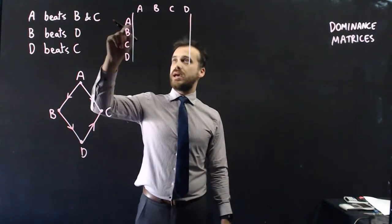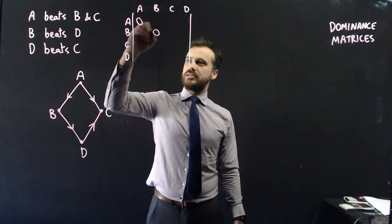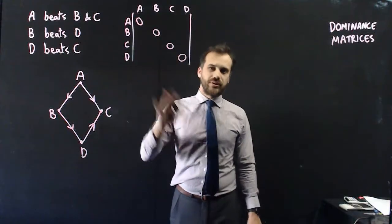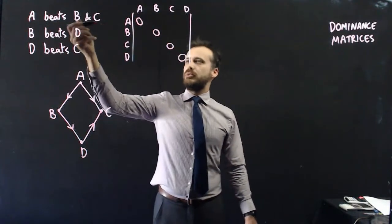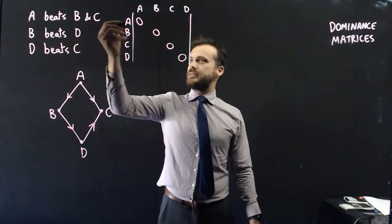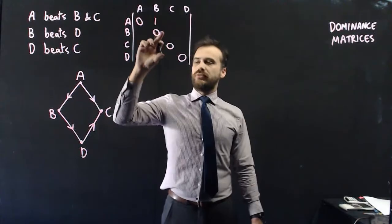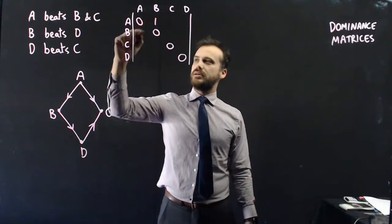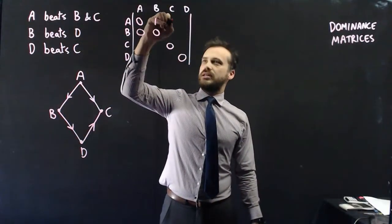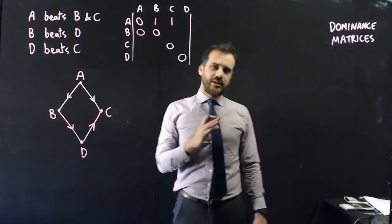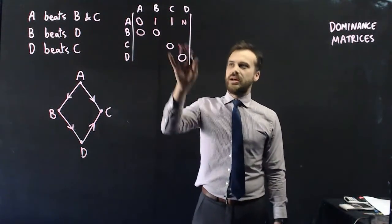Here's our matrix. A doesn't play A — you can't play yourself — so that's a zero. Same for B, C, and D on the diagonal; that always happens. A beats B, so we put a one there — that's one win for A. B lost to A, so that's a zero. A beats C, that's another win. A didn't play D, so that's a zero — it just denotes they didn't play.